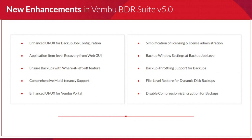File-level restore for dynamic disk backups has been introduced in version 5.0. Previously only disk mount was available; now file-level restore is supported for Windows dynamic disk backups. Additionally, compression and encryption can be disabled for backups when using storage appliances like NAS that have their own built-in compression and encryption. In this case, the backup server provides raw data and the appliance handles compression and encryption.